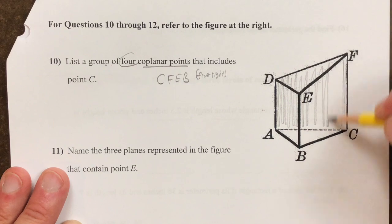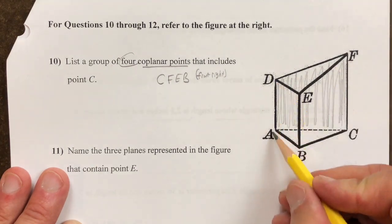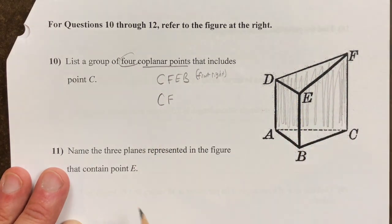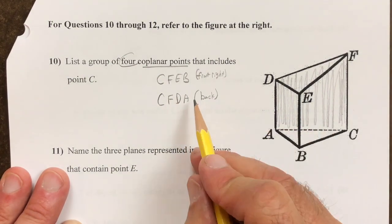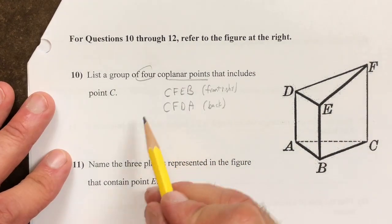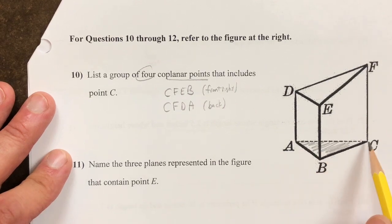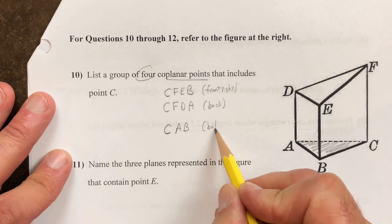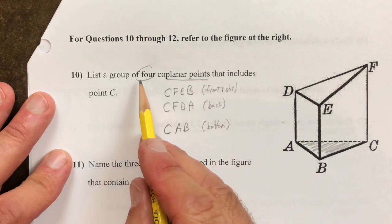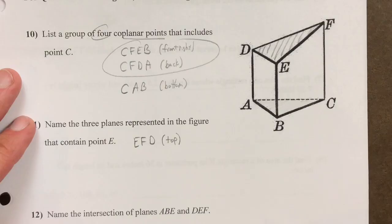Then you look at the back plane which is C, F, D, and A. We also want to consider the bottom plane which has the points C, A, and B. But that one will not be included since we only are supposed to have four points.